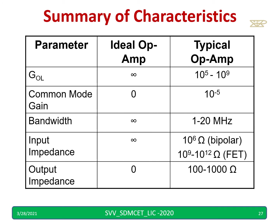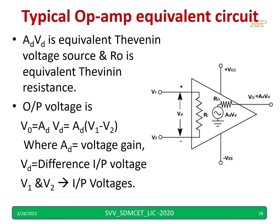In summary, ideal op amp characteristics expect input impedance to be infinity and output resistance to be zero, but a typical op amp will have finite values. You can pause and review the values. A typical op amp equivalent circuit replaces the op amp in analysis: A_D times V_D is the equivalent Thevenin voltage source and R₀ is the equivalent Thevenin resistance. Output voltage equals A_D times V_D, where V_D equals V1 minus V2.